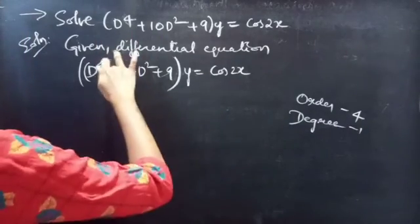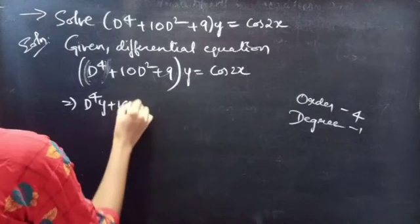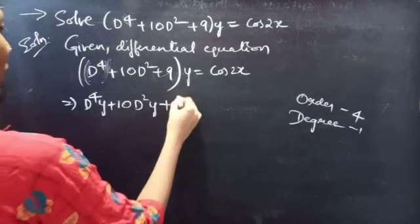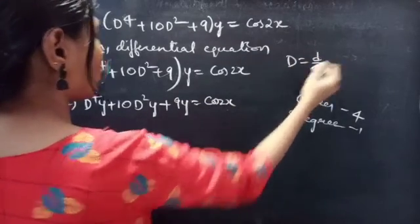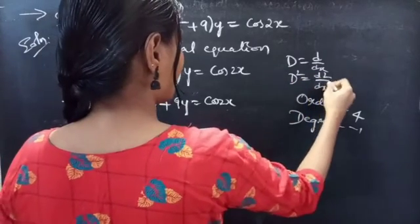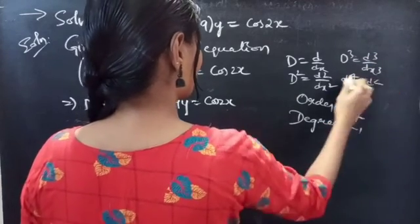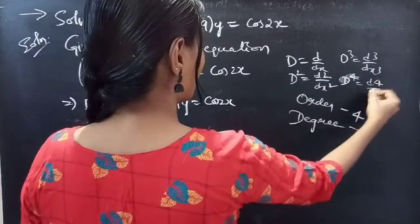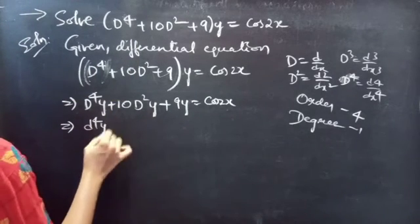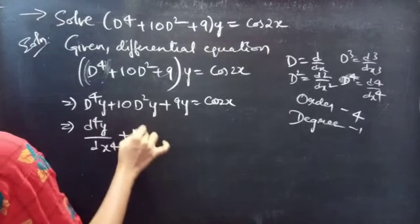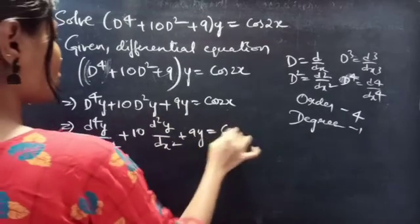We can write the given differential equation as D⁴y + 10D²y + 9y = 2cos(2x). We know that D is the differential operator. Then D² will be d²/dx², D³ is d³/dx³, and D⁴ is d⁴/dx⁴. So we can write D⁴y/dx⁴ + 10·(d²y/dx²) + 9y = 2cos(2x).